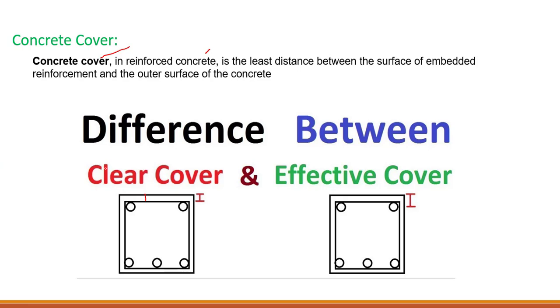We have two types of concrete cover: clear cover and effective cover. This is the clear cover, and normally we will use this one in our next videos. In our bar bending schedule, we will use clear cover. Clear cover is from the outer surface of the steel up to the outer surface of the concrete.